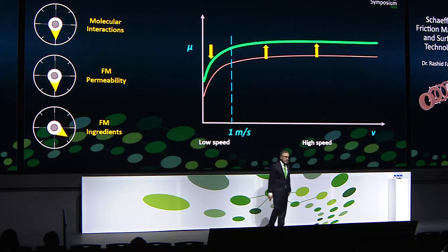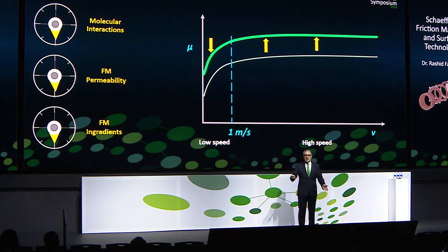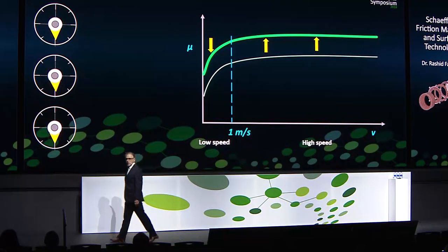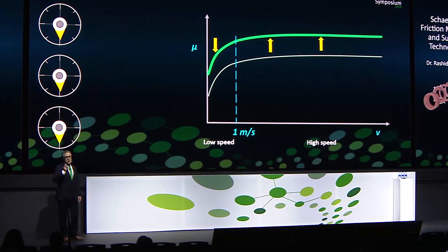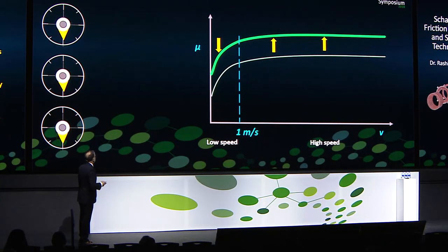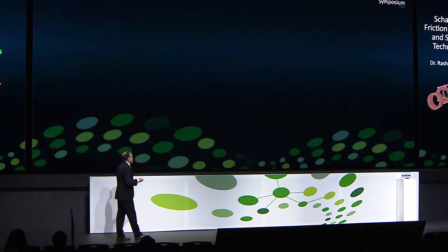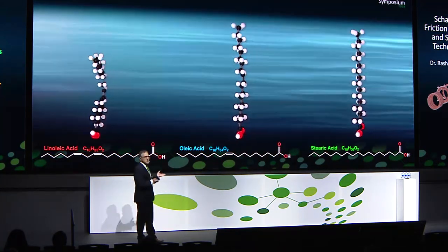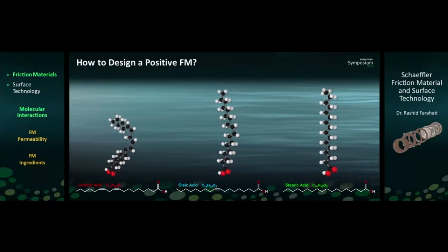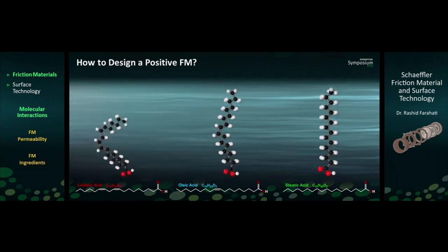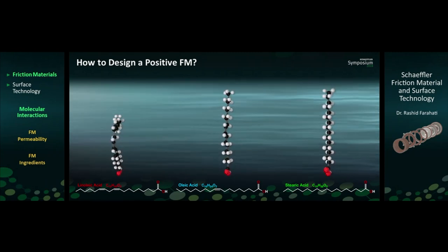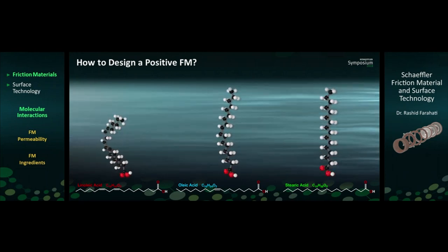Let me go through all three knobs and explain them one by one. The first knob is the friction modifier molecular interaction with friction material. I want to introduce organic fatty acid, which has been used for centuries — even from Stonehenge when they wanted to grease those stones. They used organic fatty acid. These organic fatty acids have 18 carbon chain lengths, and here I put three separate shapes on the same 18-carbon length.